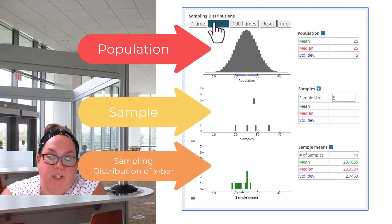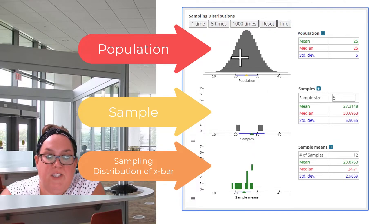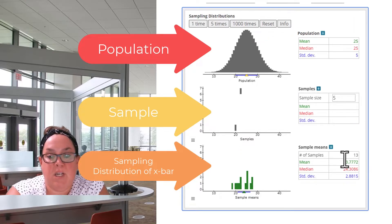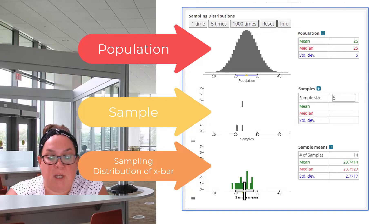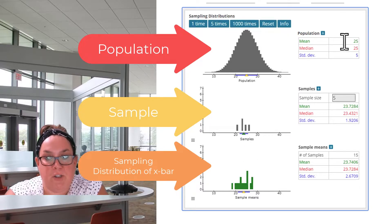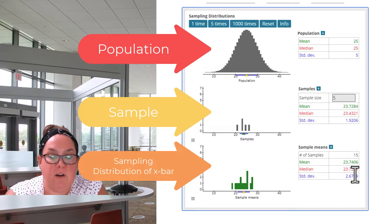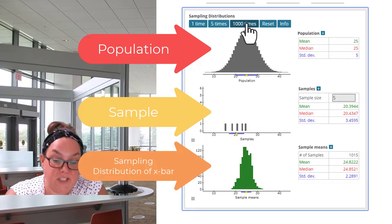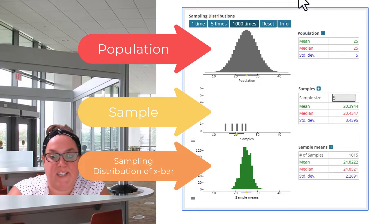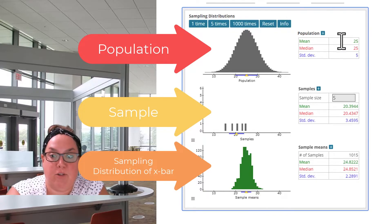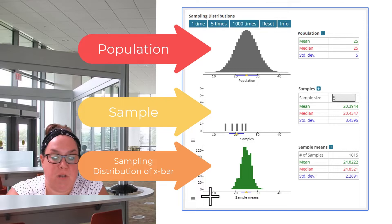Now we're up to 10 samples. You can see those sample estimates falling out. The mean is at 23, and remember that this is the mean of the sampling distribution. Up here, the population mean we're trying to get to is 25. You can also see that my standard deviation is 5 here, and down here it's 2.67. So let's jump up to 1,000 samples. One thing to notice is that we have a standard deviation of about 2.3, the mean is about 25, which means all of these X bars are centering themselves around that population mean. We can also see that the shape of this distribution appears to be normal.